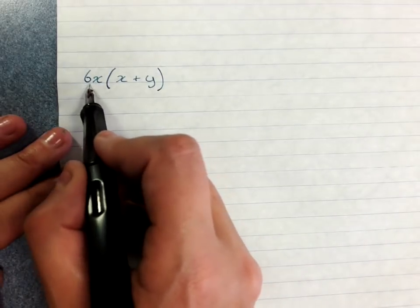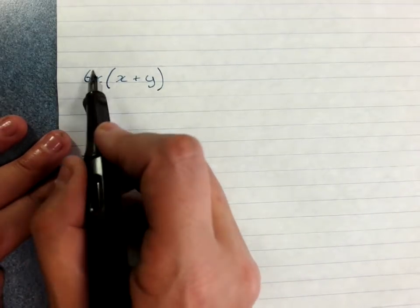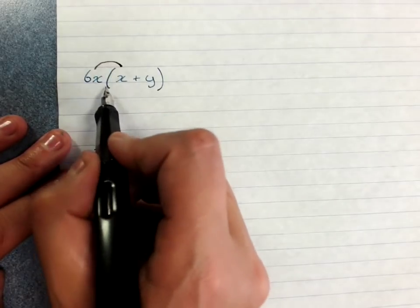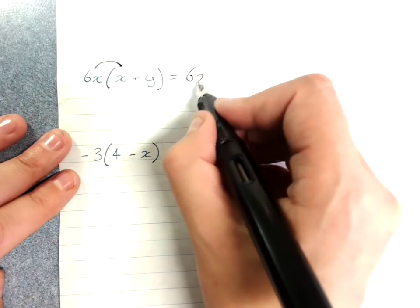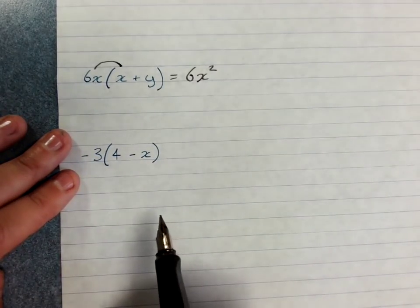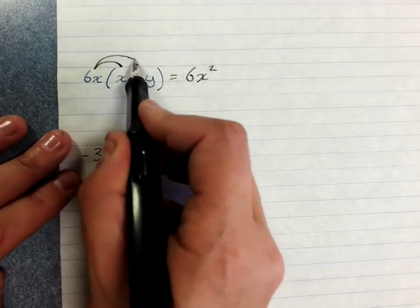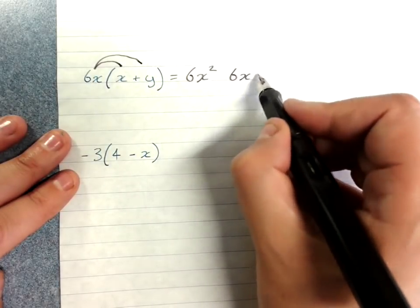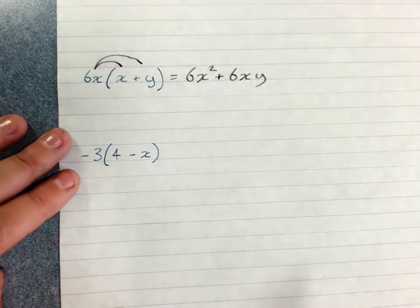Now I've got a term out the front that's algebraic. Same thing. 6x times x is 6x squared, you see we need to know our multiplication very well here. 6x times y is 6xy and it's positive so I put a plus.